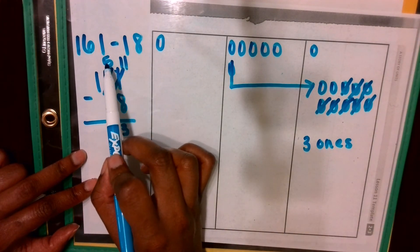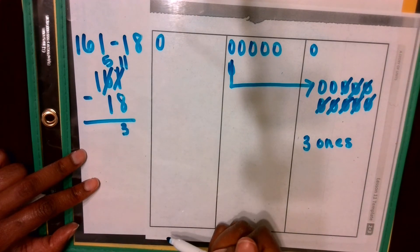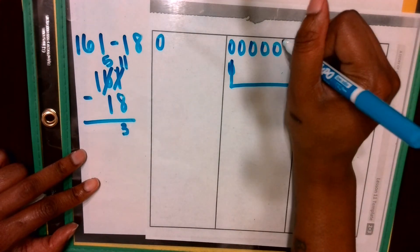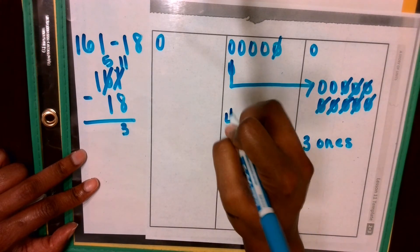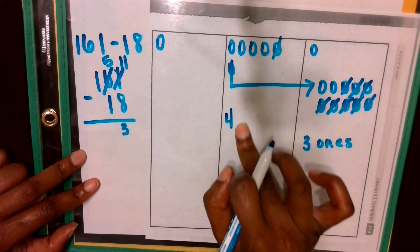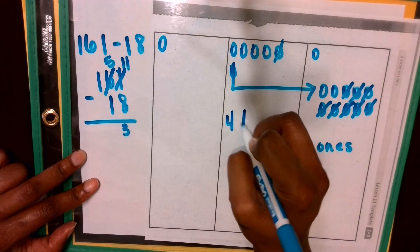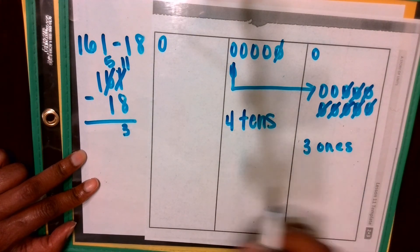Now, can I subtract 1 from 5? Yes. 5 minus 1 is 4 tens. I'm sorry, 5 tens minus 1 ten equals 4 tens.